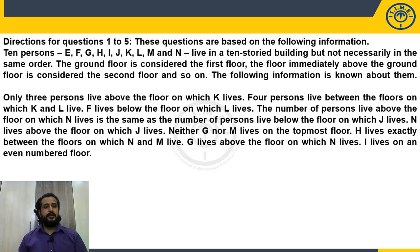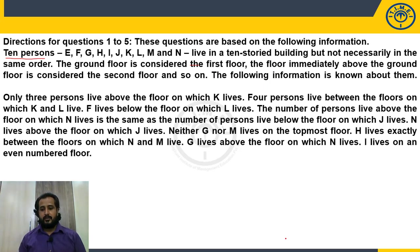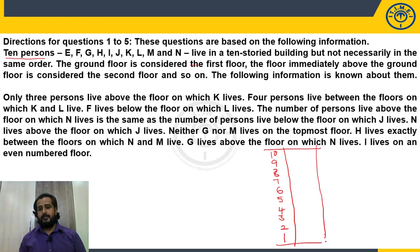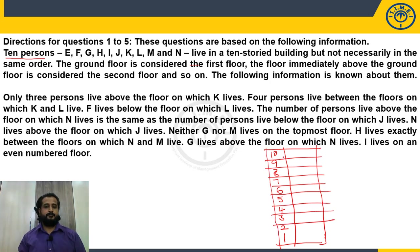You will be given data like: 10 persons E, F, G, H, I, J, K, L, M, N live in a 10-story building, but not necessarily in the same order. The ground floor is considered the first floor, the floor immediately above the ground floor is the second floor, and so on up to the tenth floor. This is the basic structure — floors numbered 1 to 10 from bottom to top.